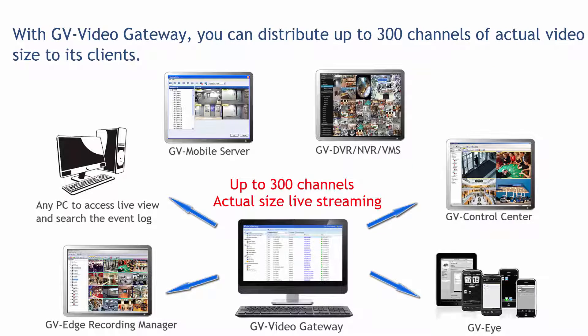With GV Video Gateway, you can distribute up to 300 channels of actual video size to its clients, such as GV DVR and DVR, VMS, GV Control Center, GVI, GV Mobile Server, GV Edge Recording Manager, or any PC to access LiveView and search the event log.